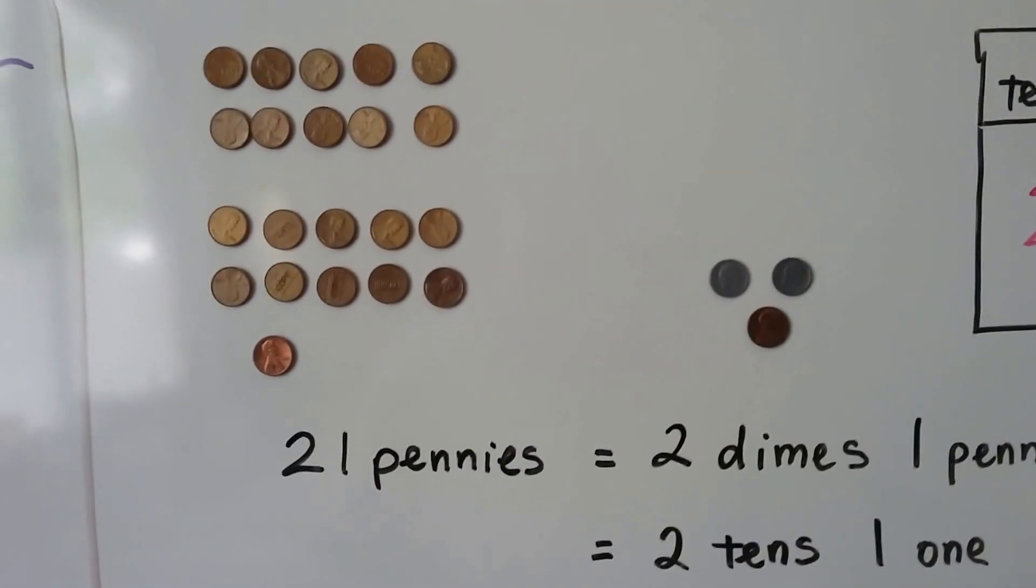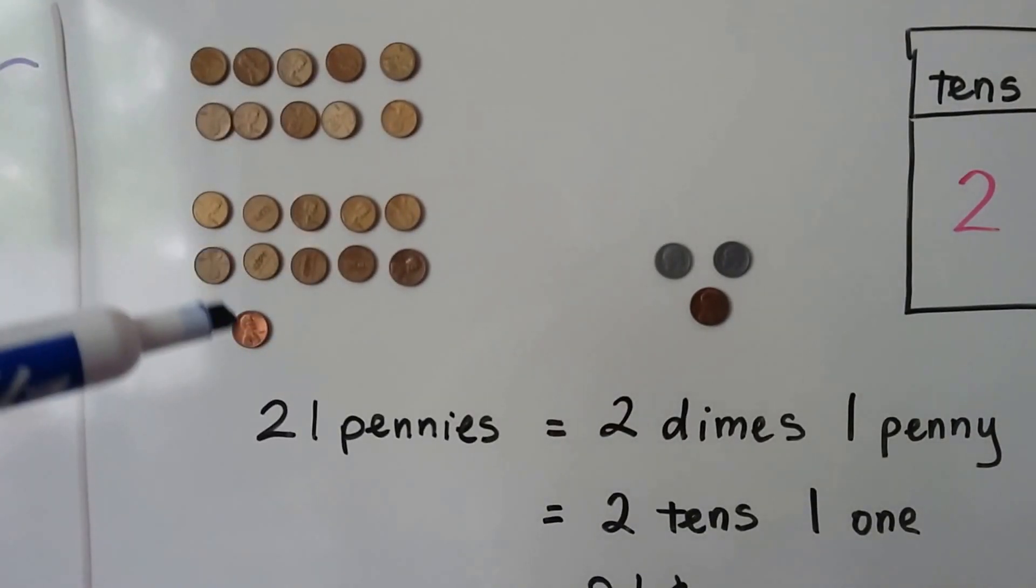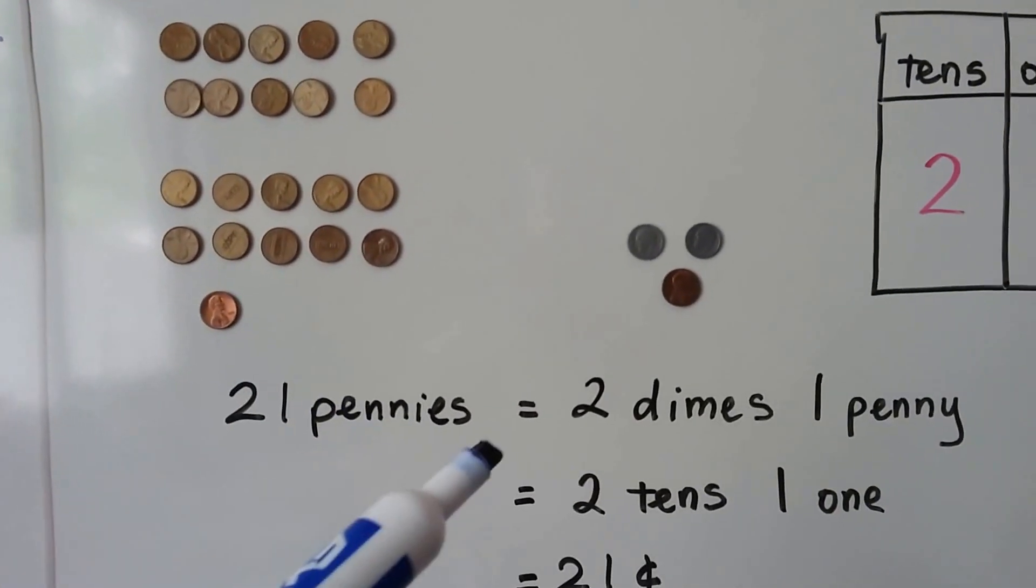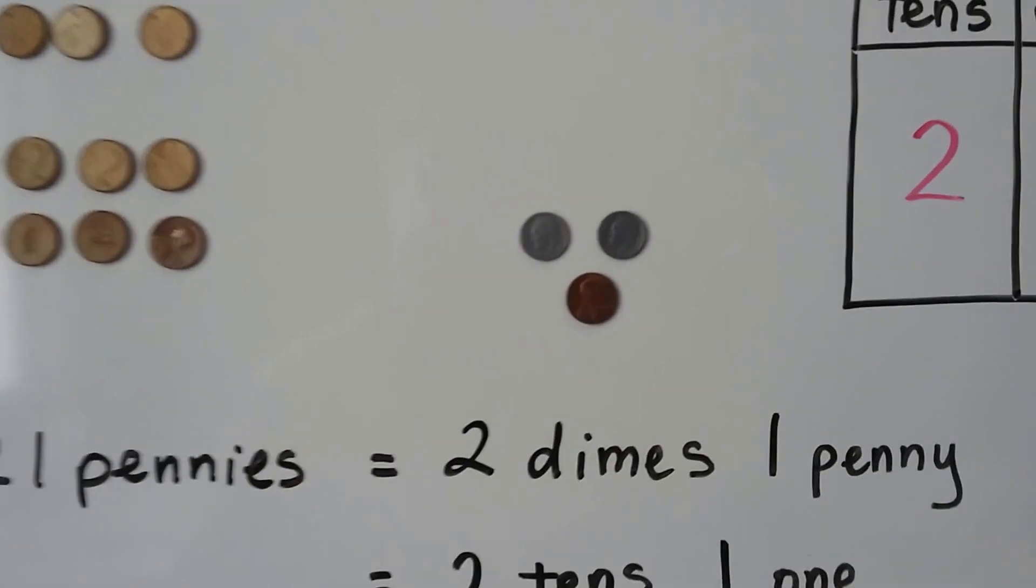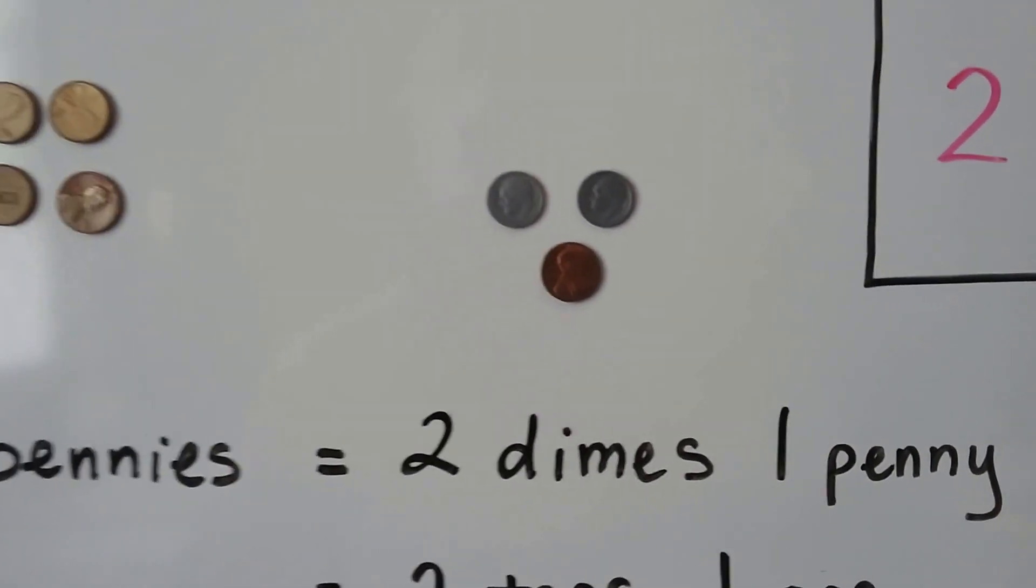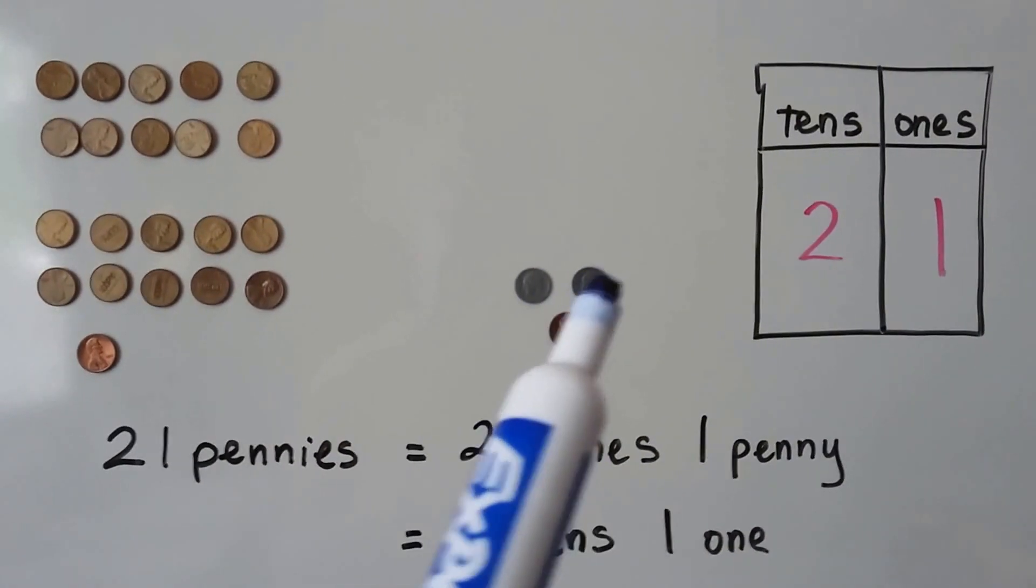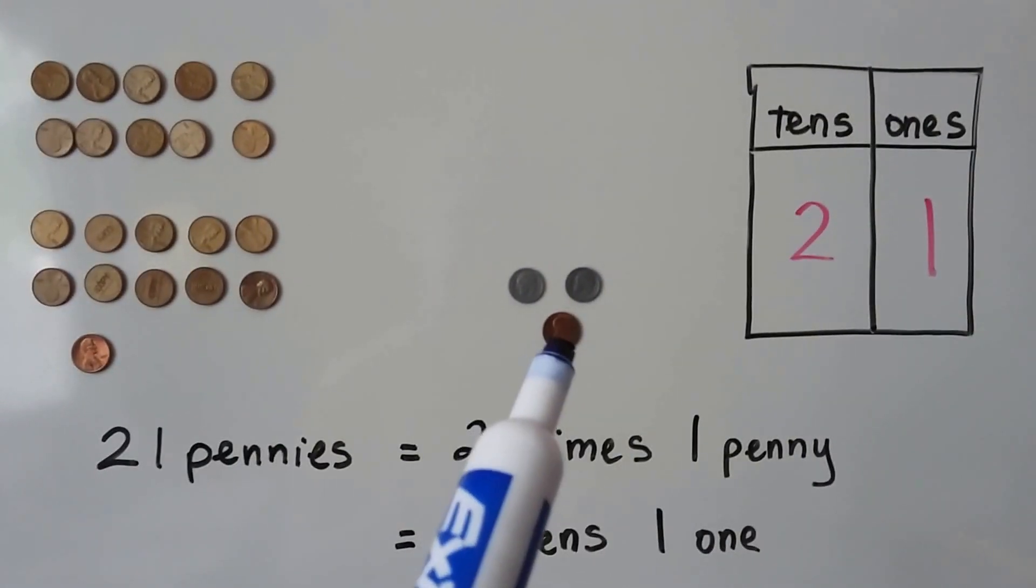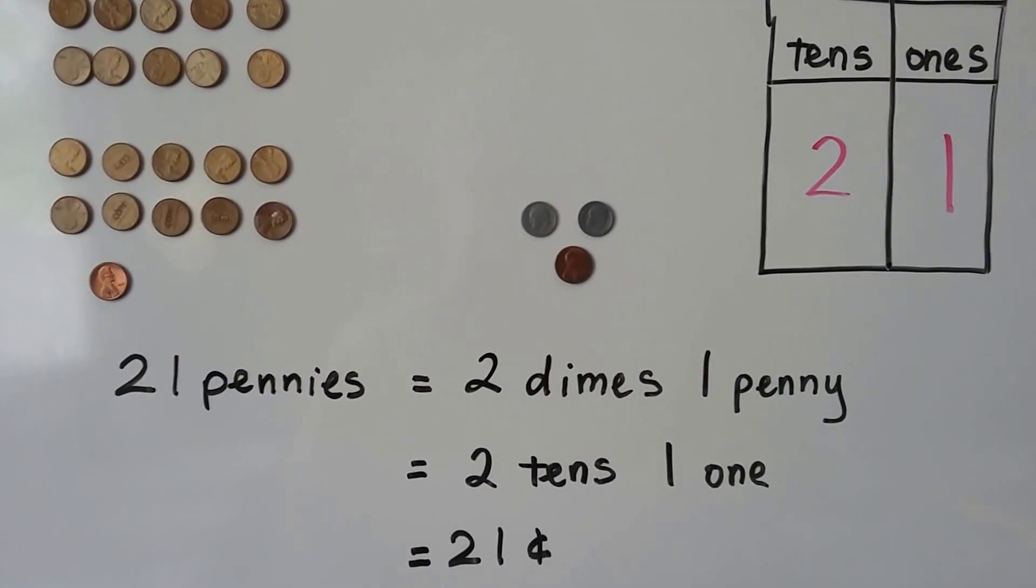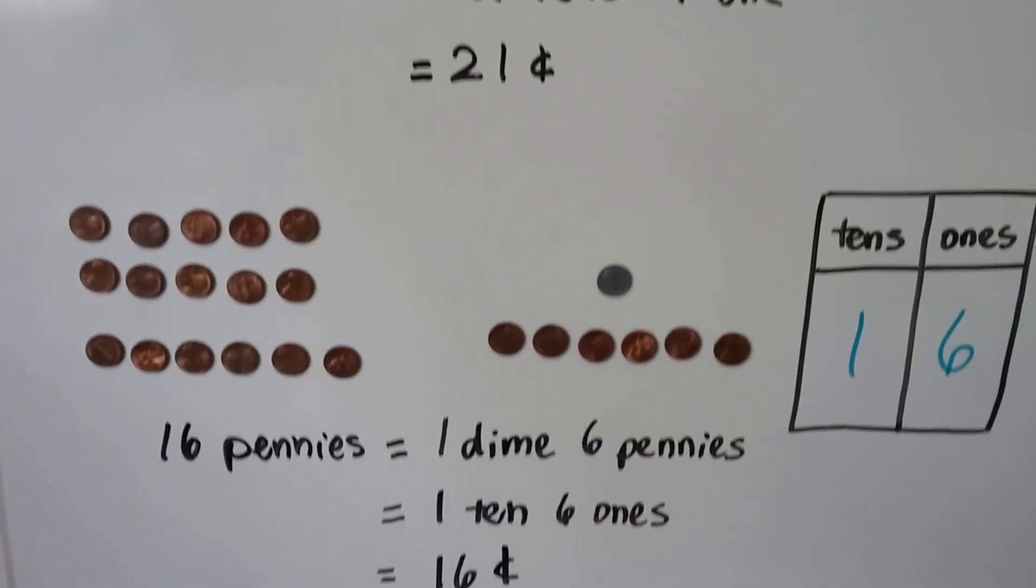Here we have some pennies. We have 10, 20, 1. We have 21 pennies. It's the same thing as two dimes and a penny. They're equal. That's two tens and one one. That would be 21 cents.